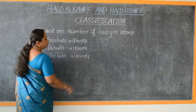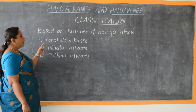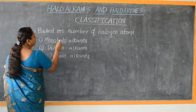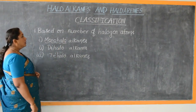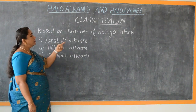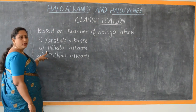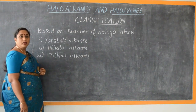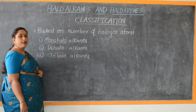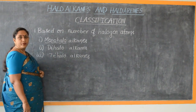The name itself gives you a clear idea about how many halogens are attached in these three different types of alkanes. Mono-haloalkanes contain one halogen atom attached to the alkyl group. Di-haloalkanes contain two halogen atoms attached to the alkyl group. Tri-haloalkanes contain three halogen atoms attached to the alkyl group.